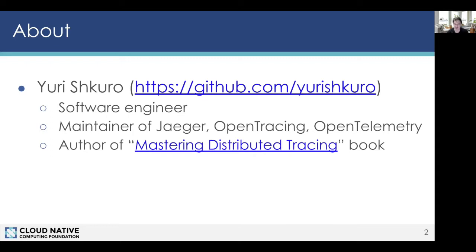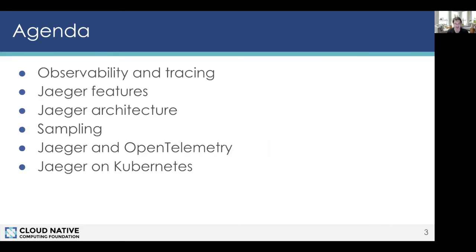First, Anna will give an introduction and then we'll talk about Jaeger features and architecture. I will talk about sampling, which is an area where people often have questions. Pavel at the end will talk about Jaeger integration with OpenTelemetry and deploying Jaeger on Kubernetes. So first, Anna, take it away with the intro to tracing.